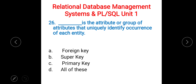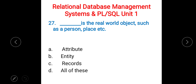Next: dash is the attribute or group of attributes that uniquely identifies each entity occurrence. A) foreign key, B) super key, C) primary key, D) all of these. The right answer is C) primary key. Next: dash is the real-world object such as a person, place, etc. A) attributes, B) entity, C) records, D) all of these. The right answer is B) entity.